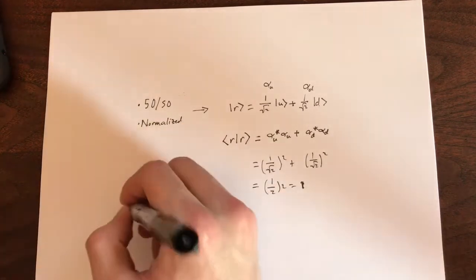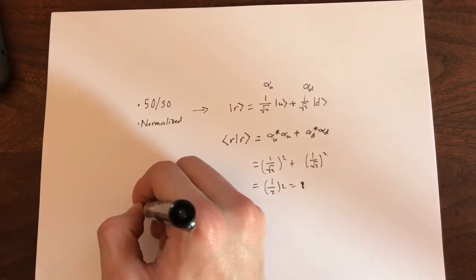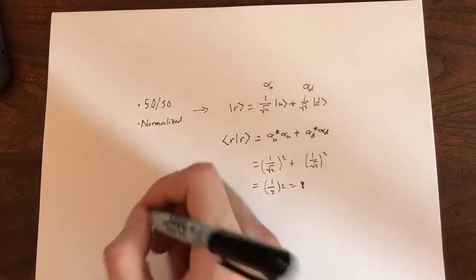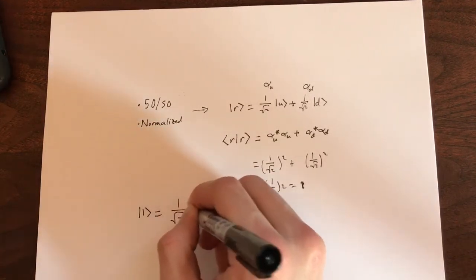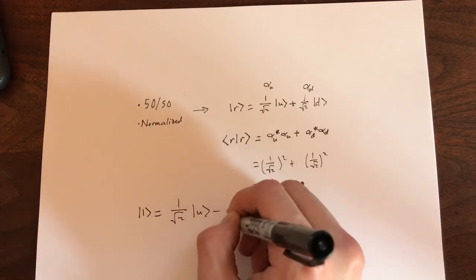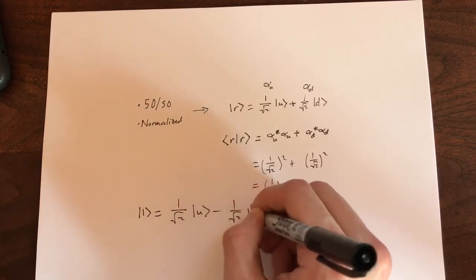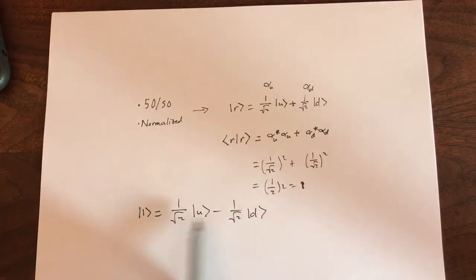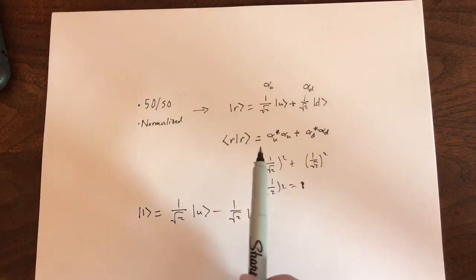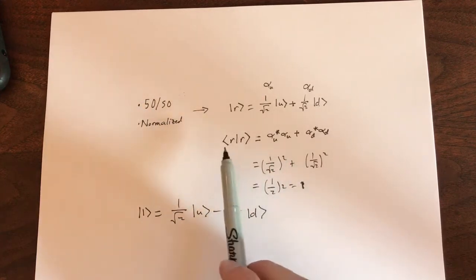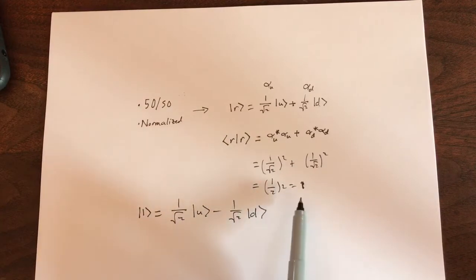It would look like this based on our earlier definition. So L for left is 1 over root 2 up minus 1 over root 2 down. Now we see that these are the same value except for the negative sign, so they must be 50-50 like before. And we already proved that when you take the dot product of this with itself, it'll come out to 1.